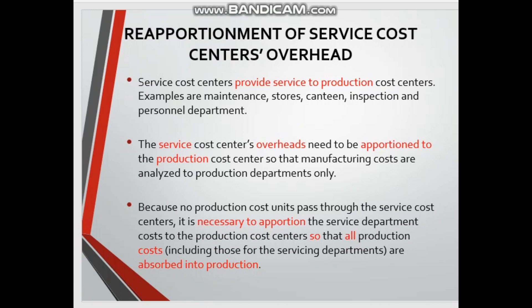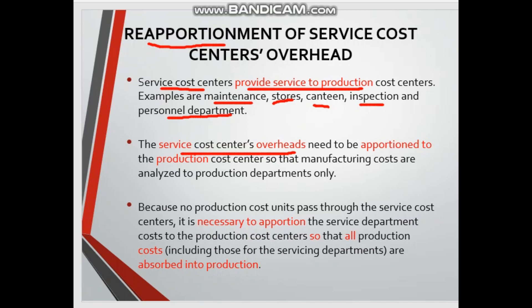After we finish allocation and apportionment, what we have to do now is reapportion. Reapportionment means we have to eliminate the service department and transfer all the costs to the production department. The first thing to note is that service cost centers only provide services to production — for example, departments like maintenance, stores, canteen, inspection, and personnel department.